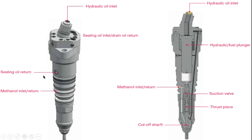To summarize the ports: hydraulic oil inlet, sealing oil return, sealing oil drain, and methanol inlet return. Looking at the internal diagram, this MBIV design is also the same for the FBIV — Fuel Booster Injection Valve. If methanol is used as a fuel, this injector acts both as a main injector as well as a pilot injector.